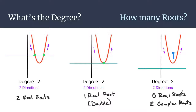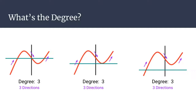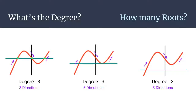Let's take a look at a cubic function to see what's happening. As we look at these three different cubic functions, you see that they all have a degree of three because they all have those three different directions that they travel — going up, then down, and up. The question we're trying to answer is how many roots does this graph have? For the first graph, we have one, two, and three x-intercepts, which means that we have three real roots. All of them would be considered linear roots.